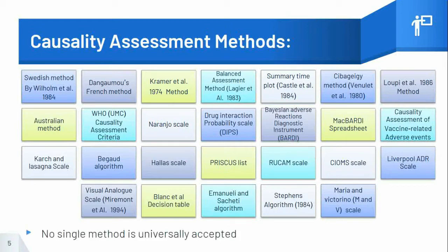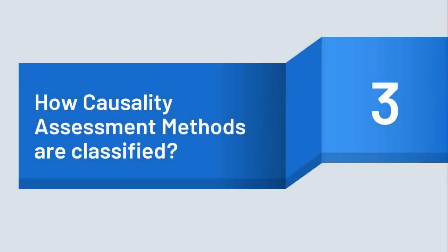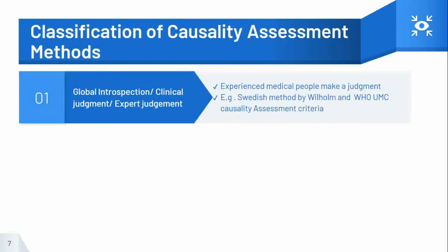Let's now see how causality assessment methods are classified. Causality assessment methods are classified into three groups: global introspection methods, algorithm methods, and probabilistic methods.